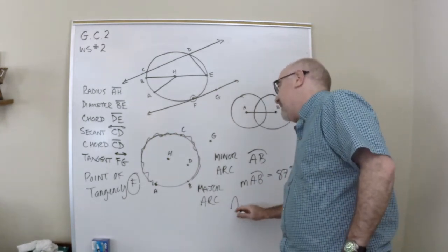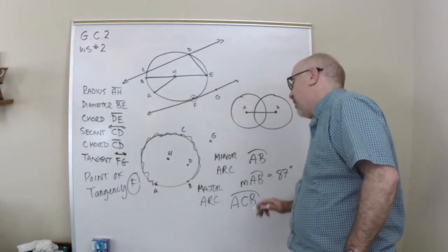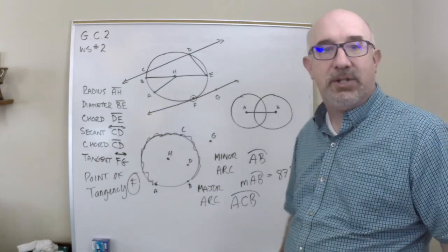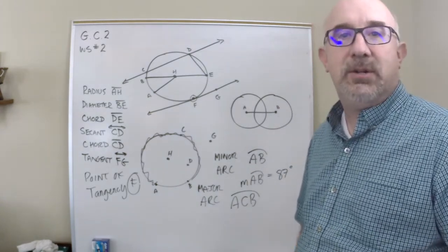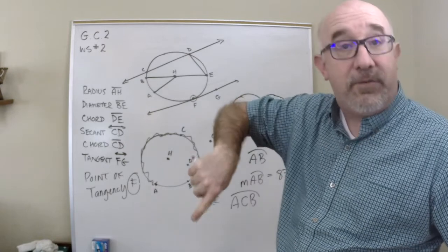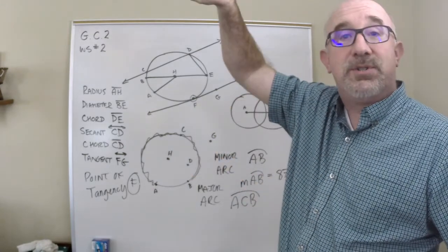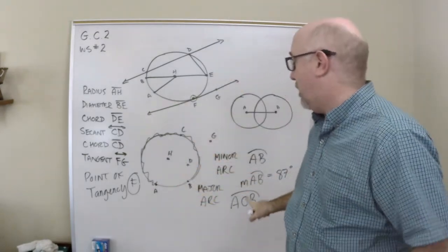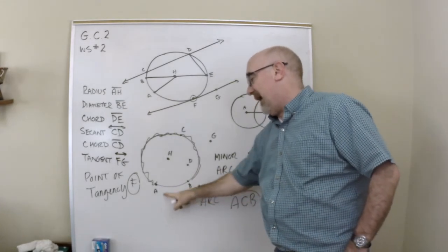And so, it gets three letters, A, C, B. Same arc symbol, same representation. But it demonstrates to us that it's going from A on its way to C, then to B. Whereas, this went straight A to B, major and minor arcs.